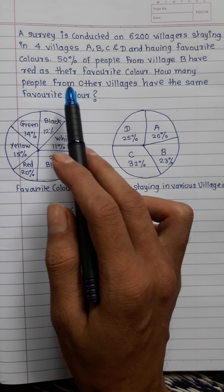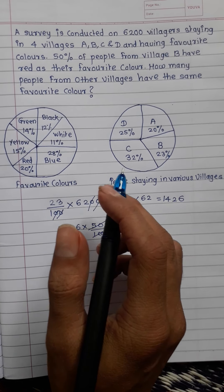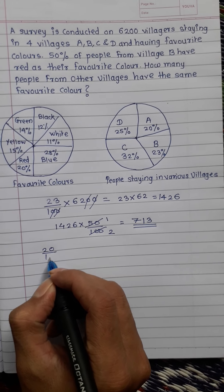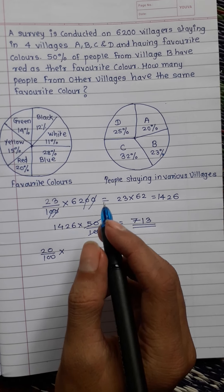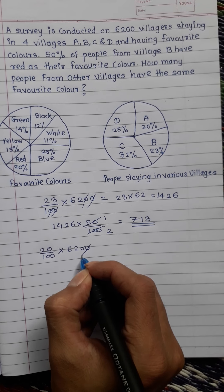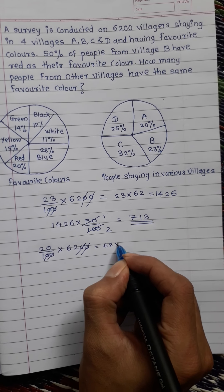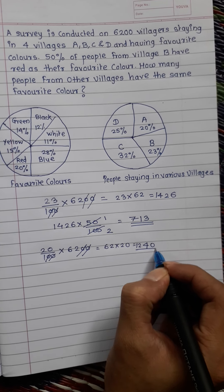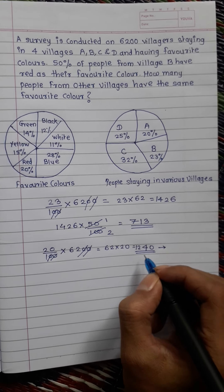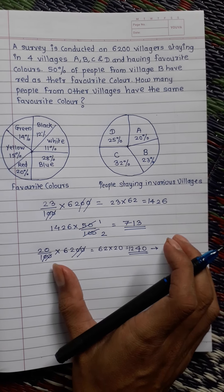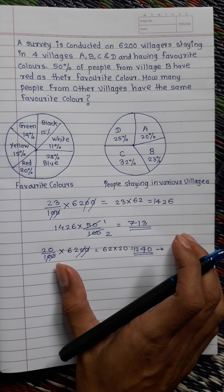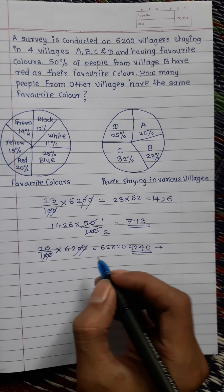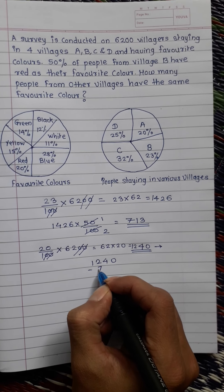Now we want to calculate how many people from the other villages like red. As we know, 20% is red, meaning 20 upon 100 multiplied by the total number of villagers, which is 6200. This gives 62 into 20, which equals 1240. So 1240 is the total number of villagers who like red color, among which 713 are from village B. The remaining is 1240 minus 713.